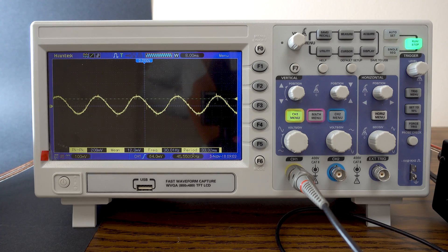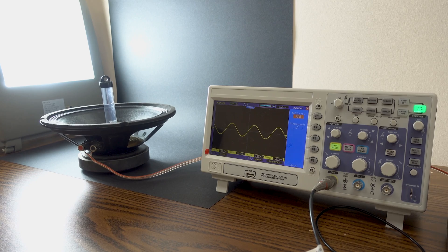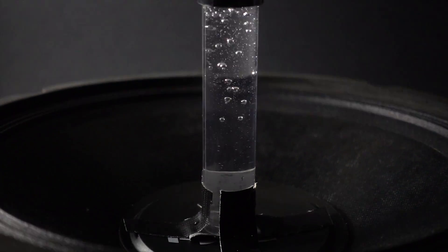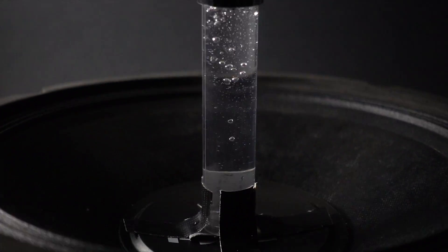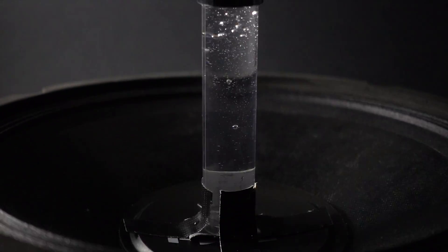We've also attached the probes of our oscilloscope to the output of the amplifier so that we could clearly monitor the signal coming out of the amplifier. The loudspeaker that we chose to use is a subwoofer. It is best used to reproduce lower frequencies, which we will be using in our experiment.